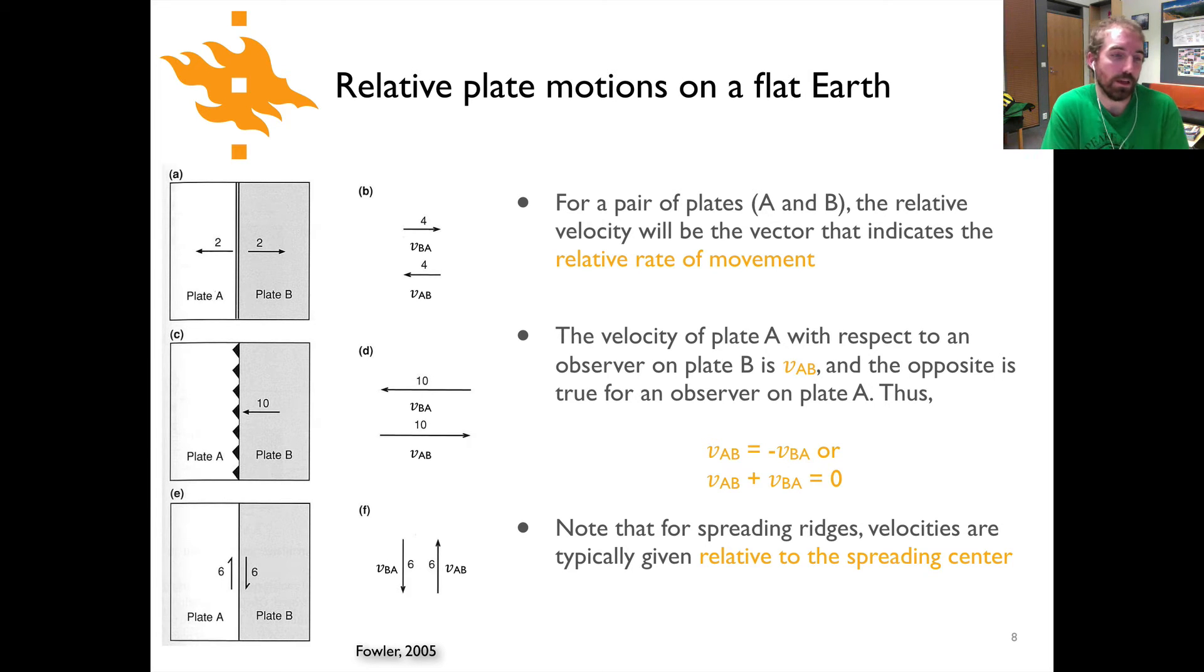And lastly, the case for a transform boundary is shown here on the bottom. In this case, we have velocities of 6 shown next to either one of the arrows. It's important to note here that does not mean that we have a total velocity of 12, but rather it's like the case for subduction where we have a velocity of 6 on either side of the transform fault.